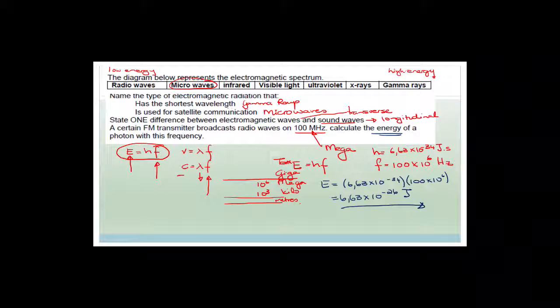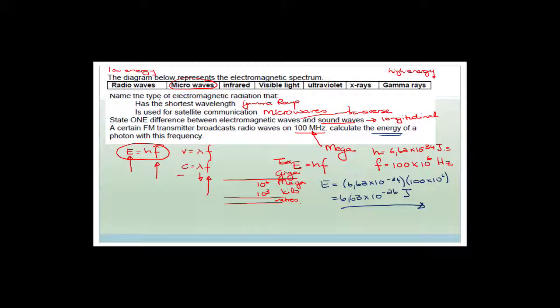You can see it's a combination of learning and calculation work. We could work out which was the shortest wavelength as long as we knew gamma rays have high energy. But we had to learn that satellite communication uses microwaves — radio waves are reflected by the Earth's atmosphere because of their long wavelength.